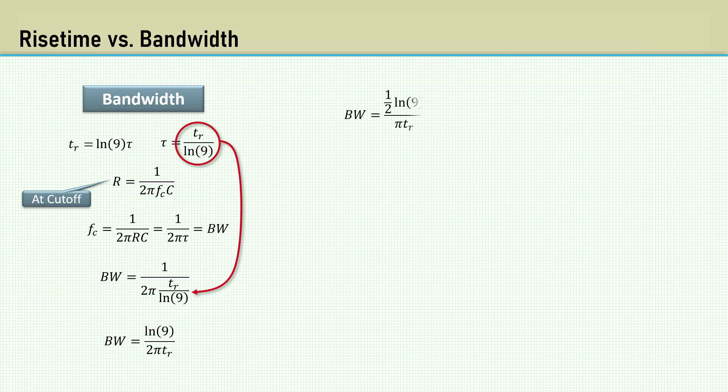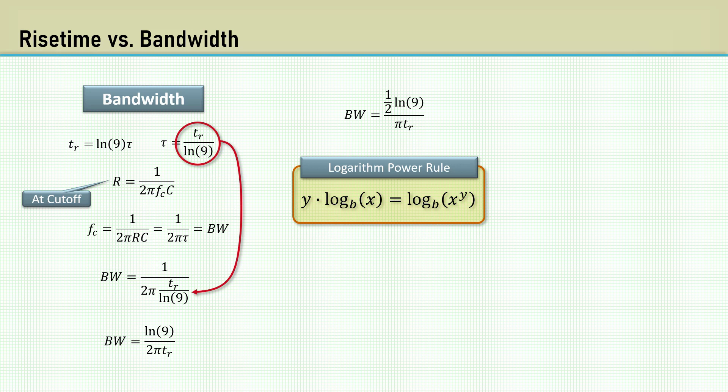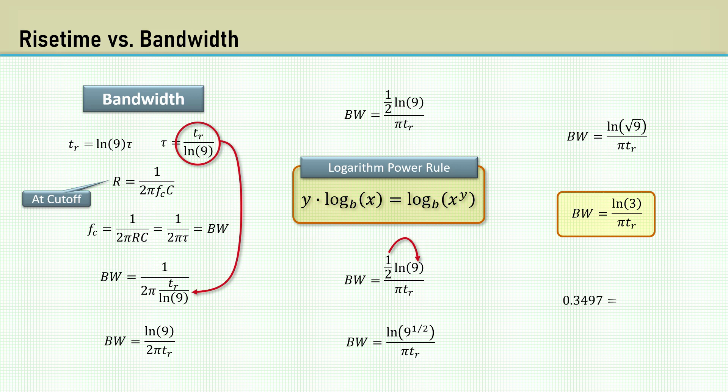The 2 in the denominator is the same as one-half in the numerator. Recall the logarithm power rule. If there is a value multiplied in front of a logarithm, the value can be taken as an exponent to the argument. We can cast that one-half inside the log function as an exponent to have 9 raised to the half power, which is the square root of 9, and therefore, the natural log of 3. The mysterious 0.35 number we saw is precisely the natural log of 3 divided by pi.